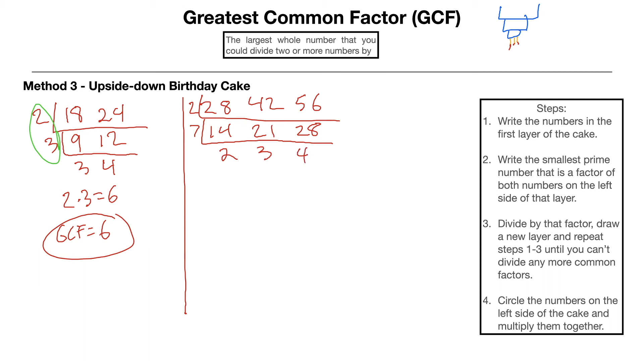Cannot divide all three of them by any more common factors. So I'm just going to circle these numbers on the left-hand side and multiply them together. 2 times 7 equals 14, which means your GCF for this would be the number 14.